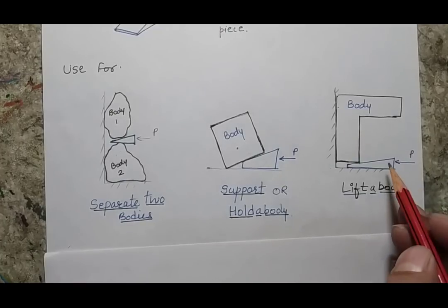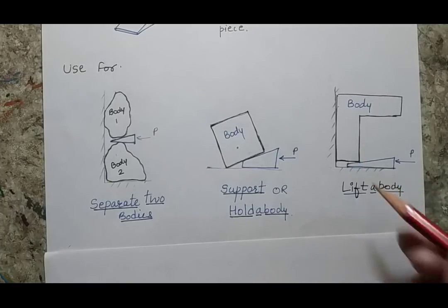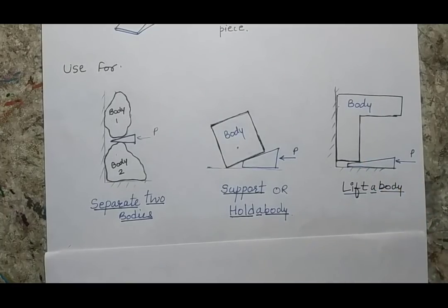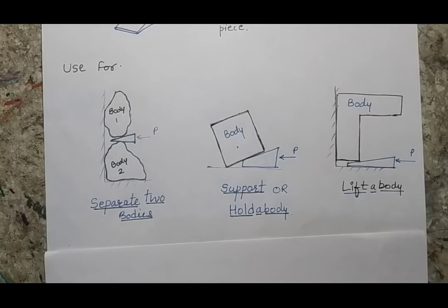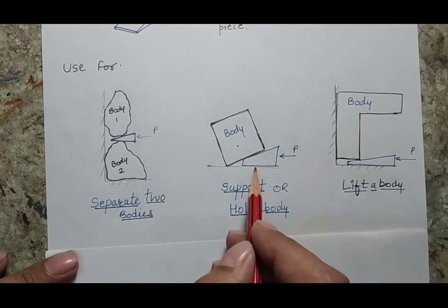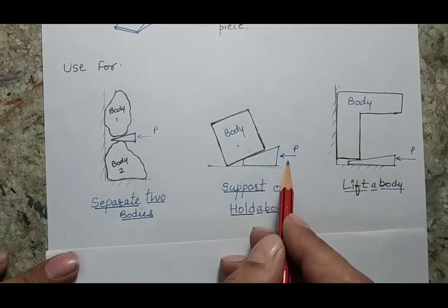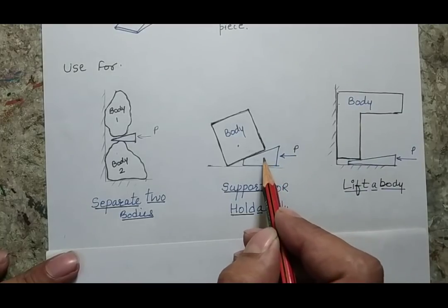In the third case, if I want to lift the body, I insert a wedge and the body will lift. Our interest here is to understand how the wedge works and what the different forces on the wedge are when it is in operating condition. For example, if the wedge is inserted between two surfaces, the body will try to push the wedge away and the force P will keep the wedge in this position.